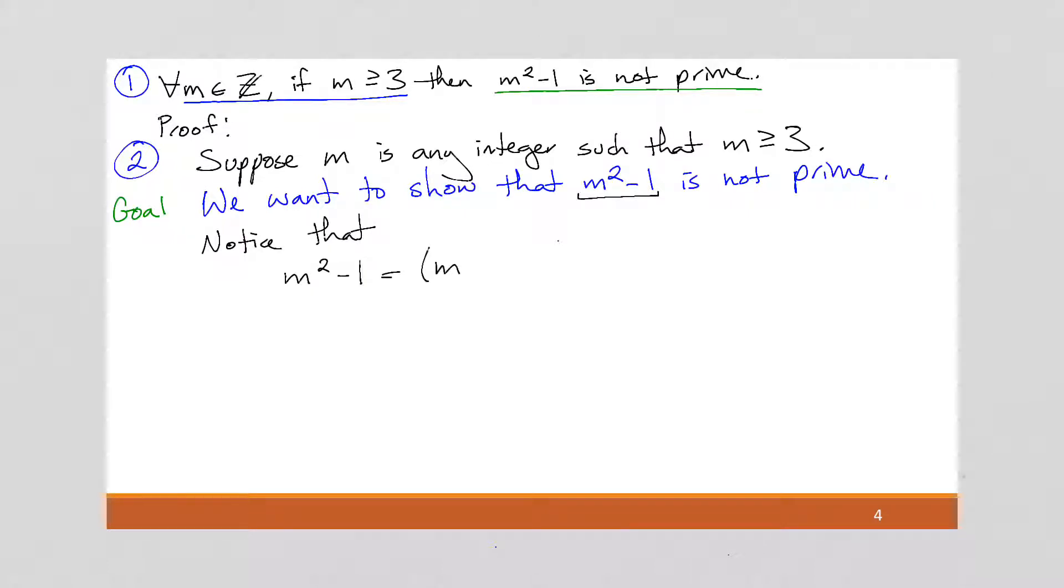We can factor this into m minus one times m plus one. Now we know m is greater than or equal to three. Right? That's part of our supposition. So if m is greater than or equal to three, then m minus one is going to be greater than or equal to two, and this is going to be greater than or equal to four.